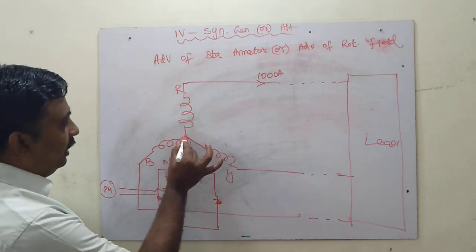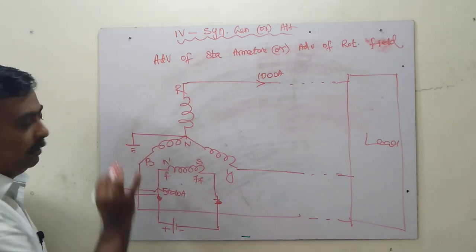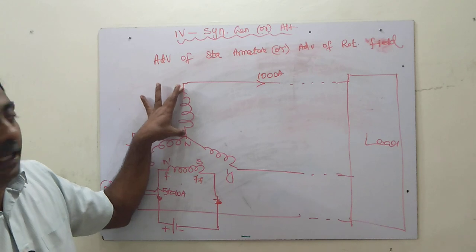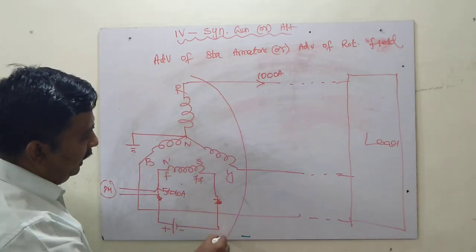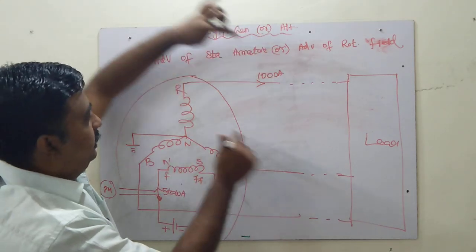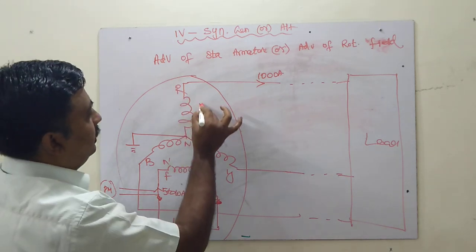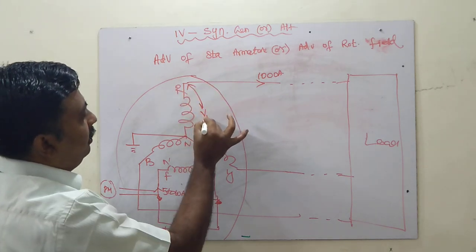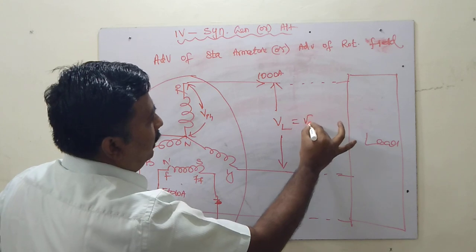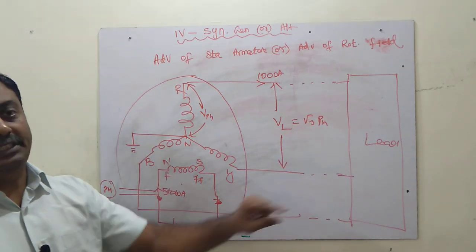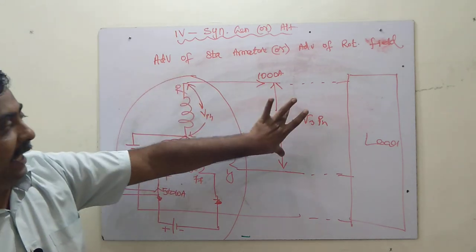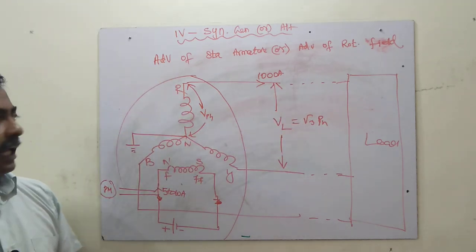The main advantage of star connection is that the neutral point can be grounded. Another advantage is voltage: the voltage generated at each winding is the phase voltage, and the voltage between lines is called the line voltage. In a star connection, the line voltage is root 3 times the phase voltage. This is a key advantage over delta connection, where phase voltage and line voltage are equal.